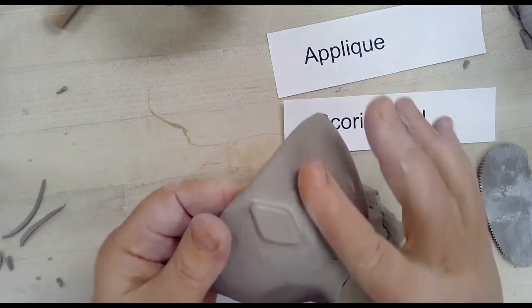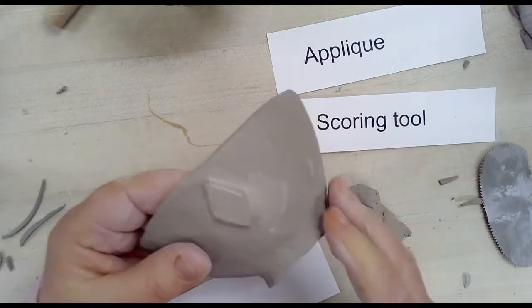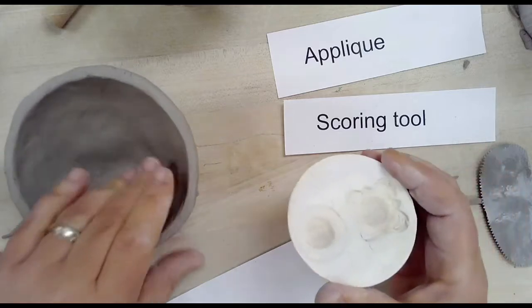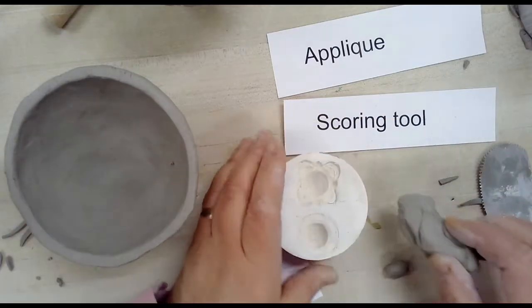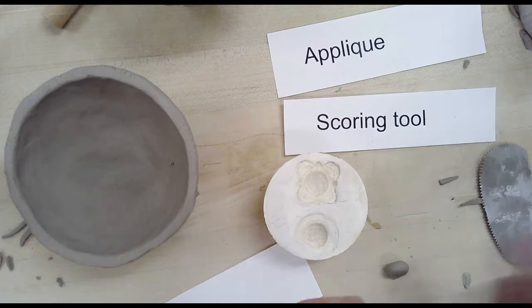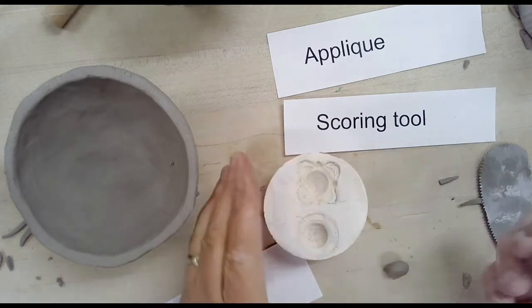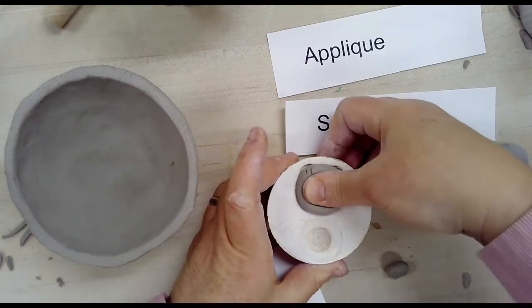You want to make certain that there are no gaps between your applique and your bowl, because as it dries the clay will shrink and the applique will pop off the surface.